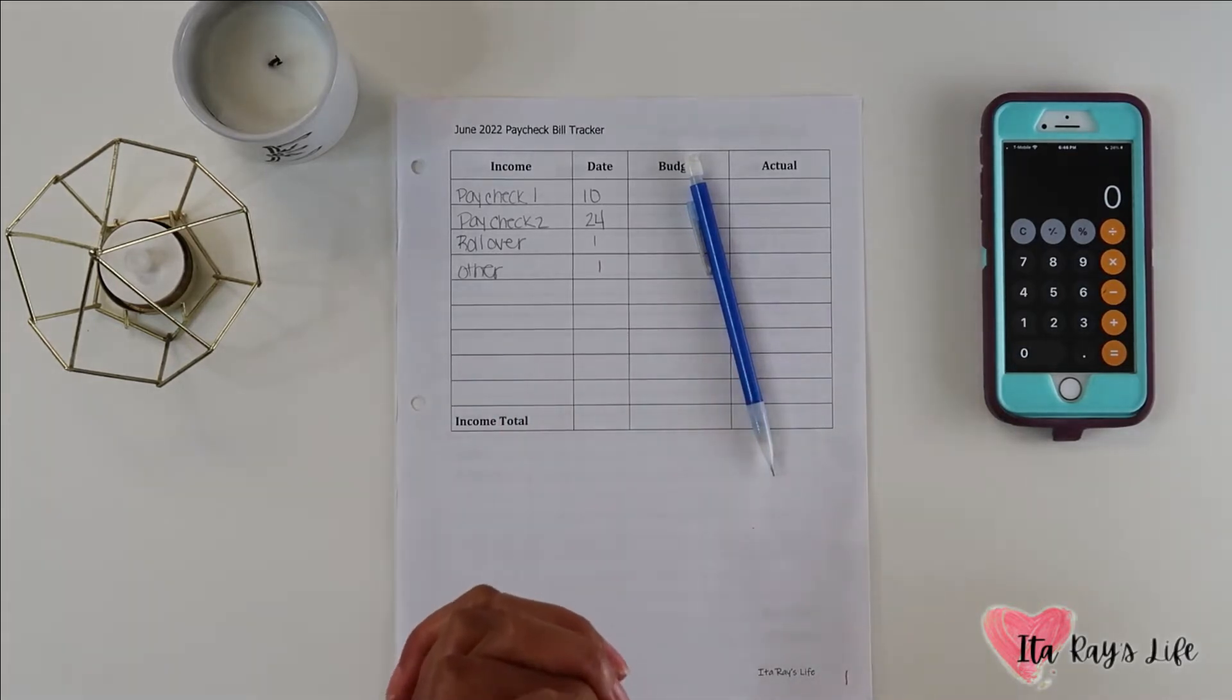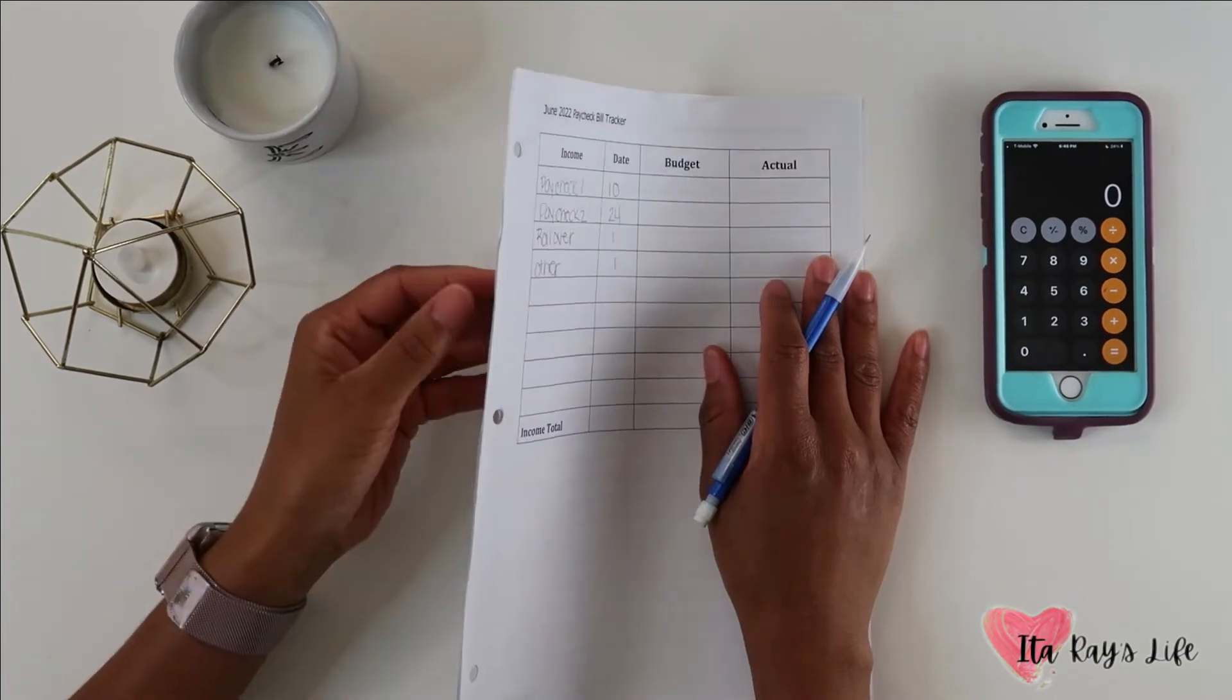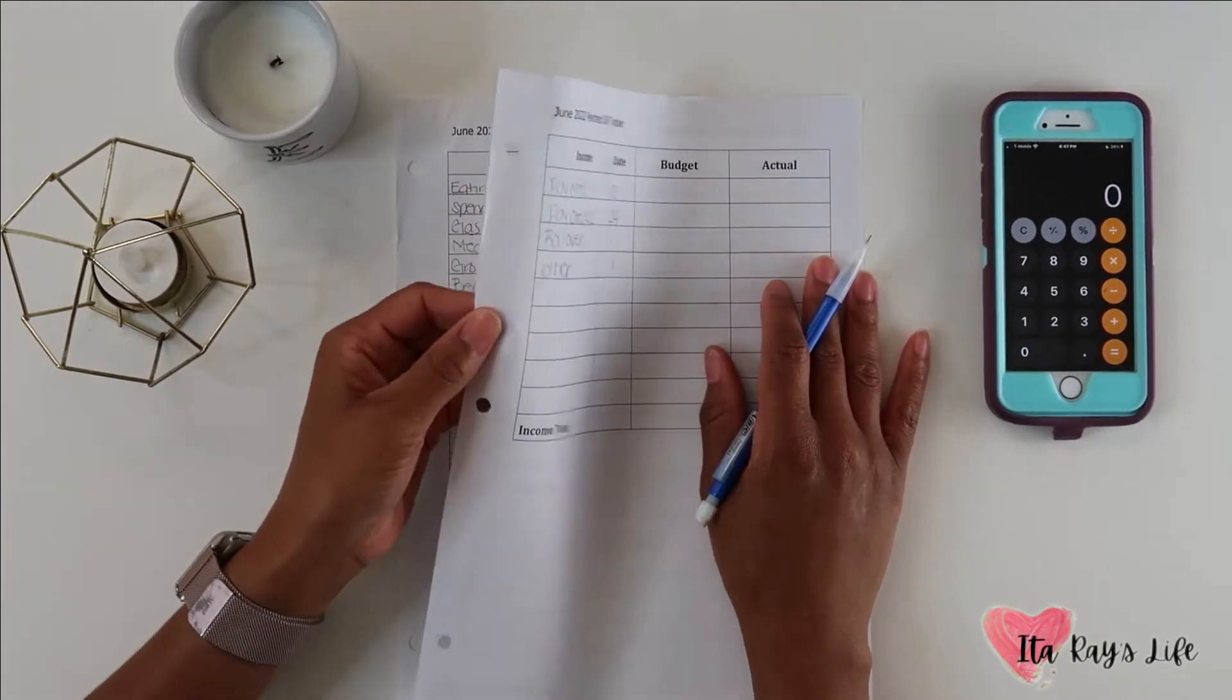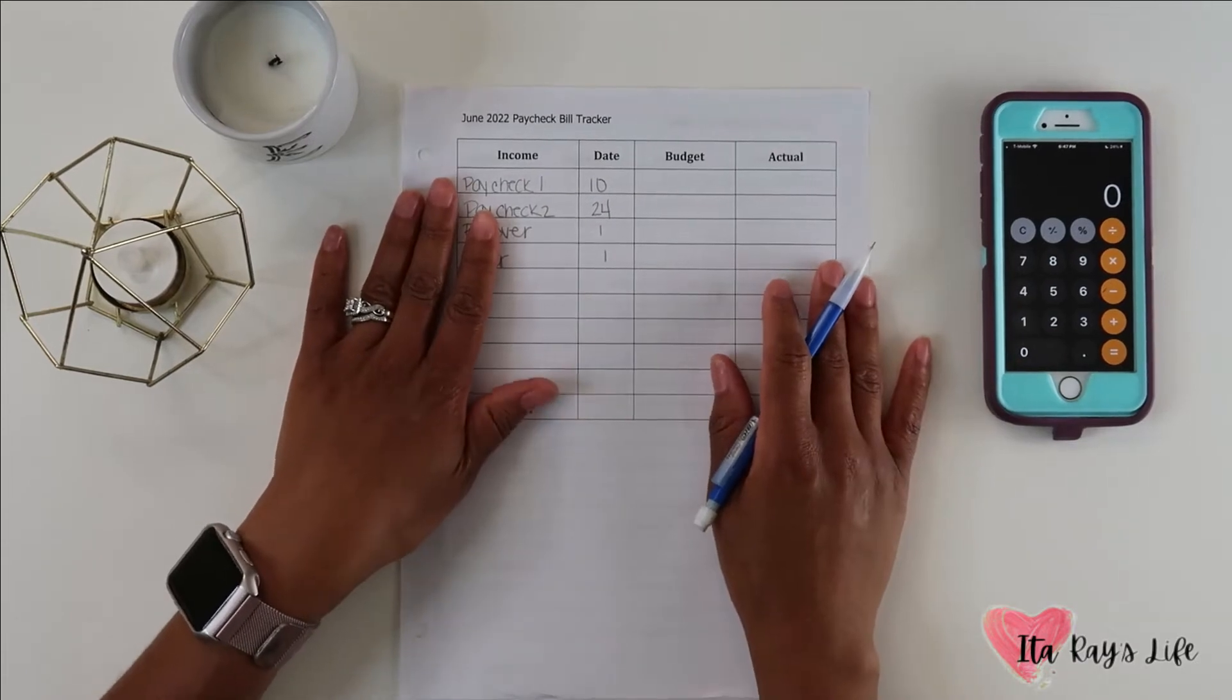In today's video we are going to be planning out the month of June. I am going to be doing my budget for the month of June. The month of June looks like it's going to be a pretty good month. I've already worked out my budget just to make sure everything is correct before I actually came here on camera.